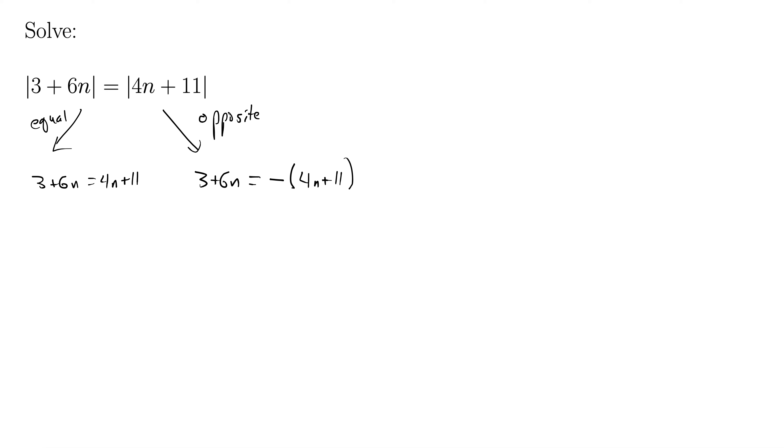Okay, now we just solve both of these. So let's subtract the 4n from both sides here, that gives us 2n, then subtracting 3 from both sides gives us 8. 2n equals 8, divide by 2, so n equals 4.